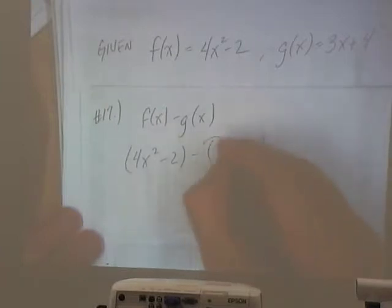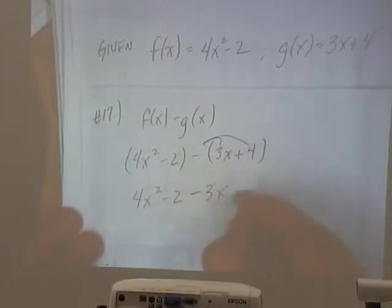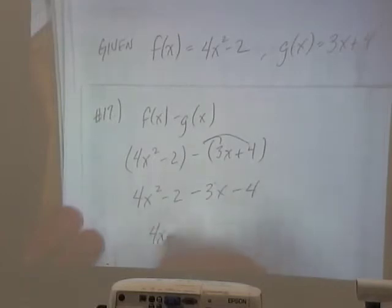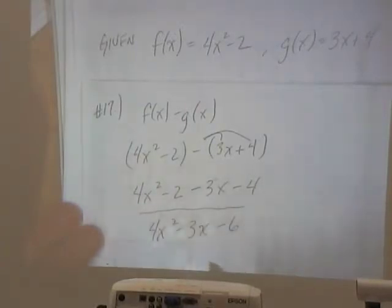Don't forget to distribute the negative. 4x squared minus 2 minus 3x minus 4. So that gives us 4x squared minus 3x minus 6. That is B also.